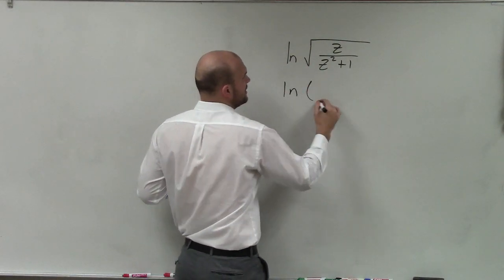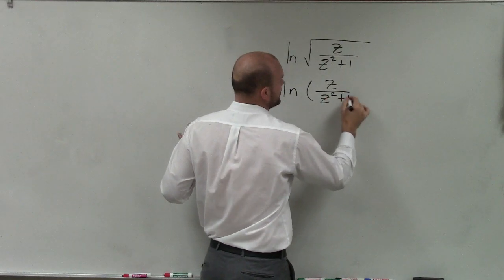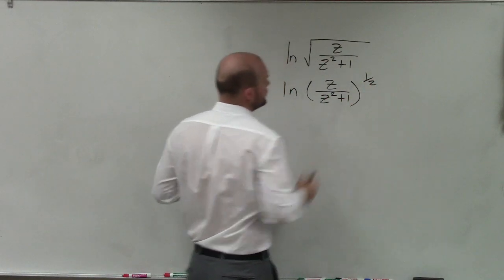So I can rewrite this as ln of z over z squared plus 1 raised to the 1 half.